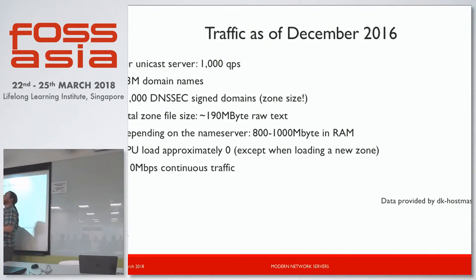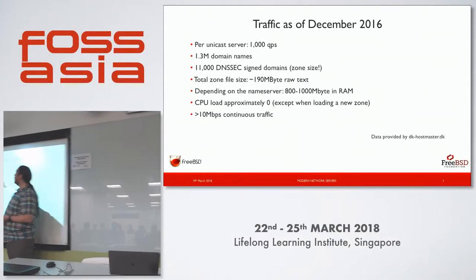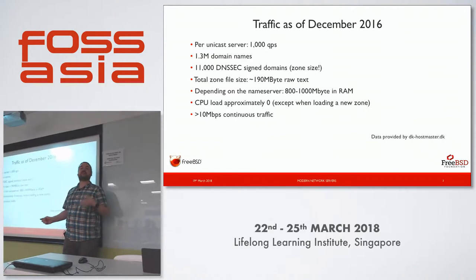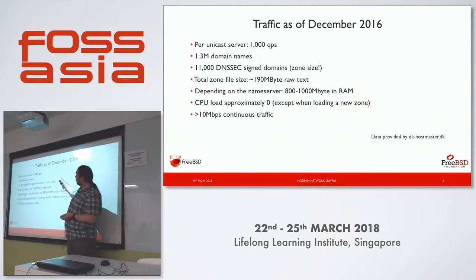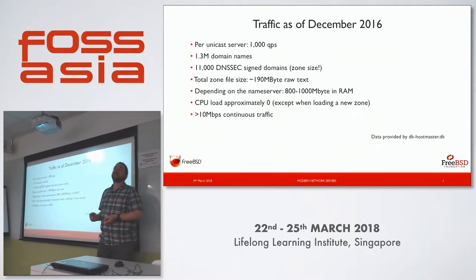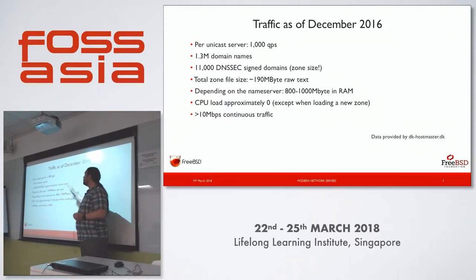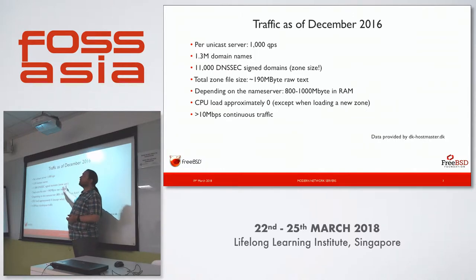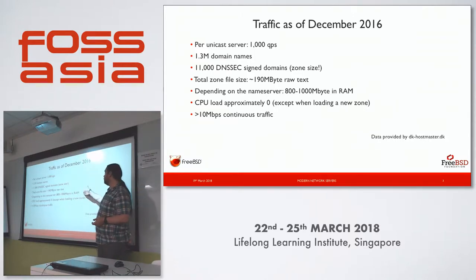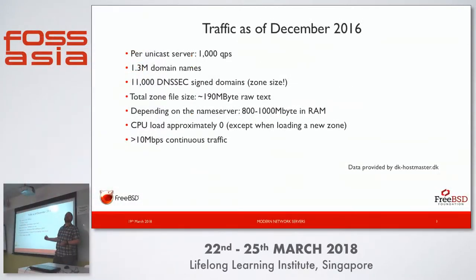The zone file size is about 190 megabytes in total. With 1.3 million domain names, most will just have one or two NS records and maybe a glue record, but the zone file is 190 megabytes of text — that's because all 11,000 DNSSEC-signed zones have DS records as well, which blows up the zone file size. Depending on the name server, this 190 megabytes of text expands to about a gigabyte of space in memory.